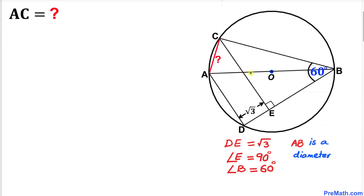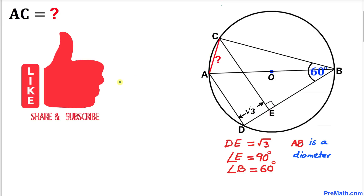Welcome to pre-math. In this video tutorial we have got a circle with a diameter AB, and moreover this line segment DE is square root of 3, this angle E is 90 degrees and this angle B is 60 degrees. Now we are going to calculate this side length AC. Please don't forget to give a thumbs up to this video.